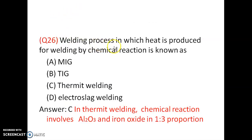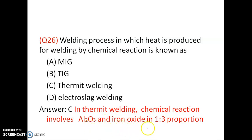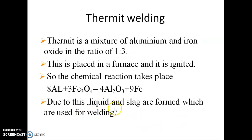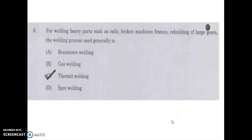The welding process in which heat is produced for welding by chemical reactions is known as thermite welding. The chemical reactions are between Fe3O4 and alumina. The chemical reaction involves alumina and iron oxide in a 1:3 proportion — alumina 1 part and iron oxide 3 parts. This mixture is placed in a furnace and ignited, causing a chemical reaction to produce liquid and slag which are used for welding.